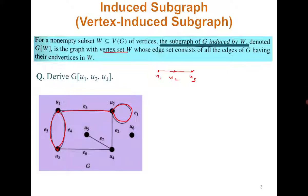So we should exclude U4, U5, U6 and the edges which are incident to U4, U5, U6 having one of their endpoints. So this is the required graph.